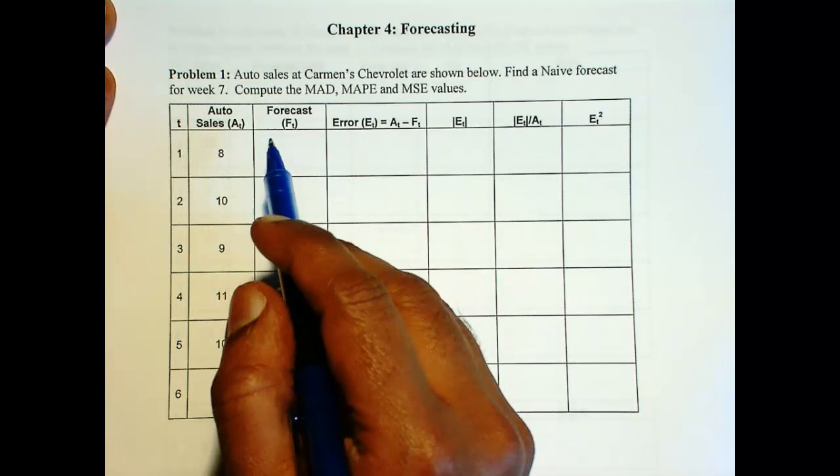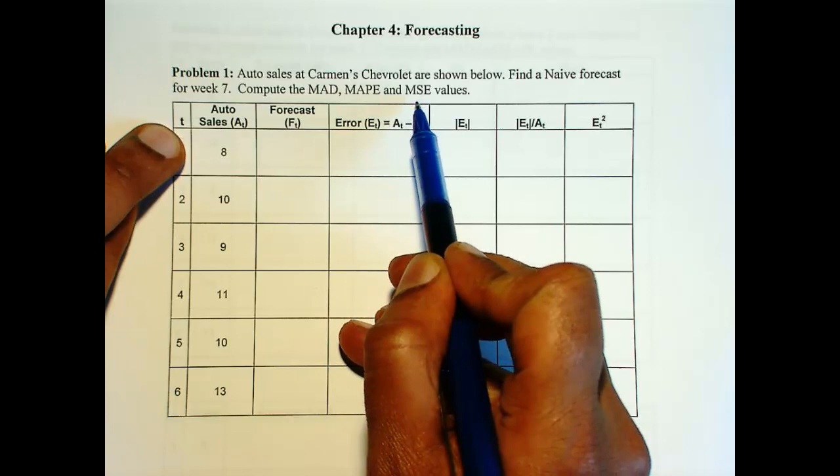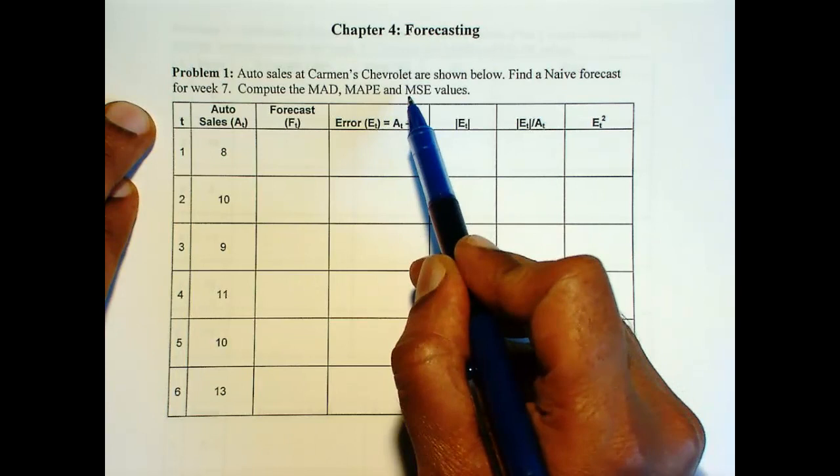This problem, we want to develop a naive forecast and also compute three different forecast error measures: MAD (Mean Absolute Deviation), MAPE (Mean Absolute Percent Error), and MSE (Mean Square Error).